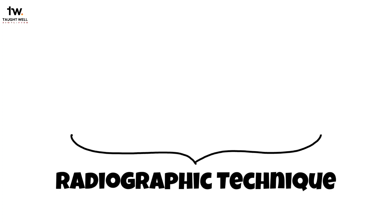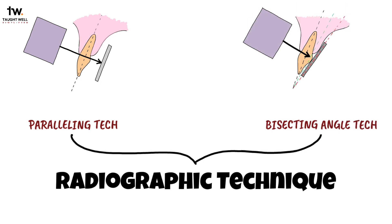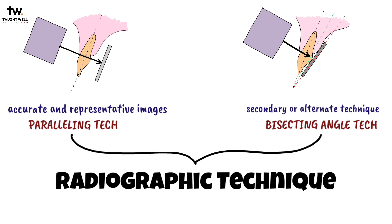There are two techniques that can be utilized for taking periapical radiographs: the paralleling technique and the bisecting angle technique. The paralleling technique is most used because it produces the most accurate and representative images of the teeth and surrounding structures. The bisecting angle technique is considered a secondary or alternate technique when the paralleling technique cannot be accomplished due to intraoral anatomy or other patient factors.